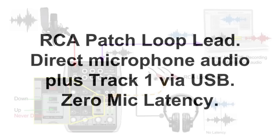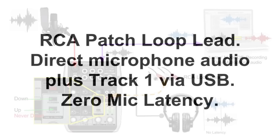To overcome the latency, with the routing option the same as before — two phones down and two main mix up — we can connect an RCA loop lead on the RCA connections on the mixer itself. This routes the audio from the mix and combines it with the audio from the USB. We have to make sure that we never press down the two main mix button, because this will create a loopback which may damage the mixer. With the RCA loop lead connected and the listen mode turned off on the laptop in your DAW, the audio from the microphone can be heard on the headphones directly with no latency. At the same time, the microphone audio is also sent to the laptop or PC via the USB, which is recorded as track two.